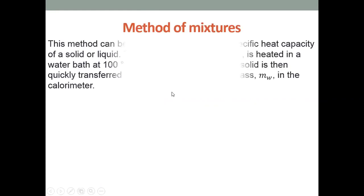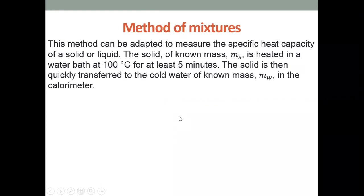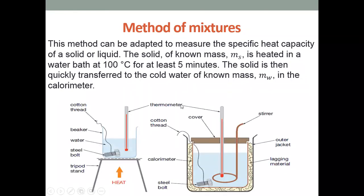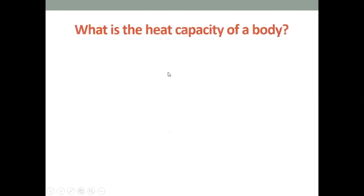The method of mixtures is another method to find the specific heat capacity of a solid or liquid. In this case, we use water. The boiling point of water is 100°C, so it takes at least four to five minutes to reach that temperature. This method can be used to measure the specific heat capacity of a solid or liquid.